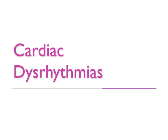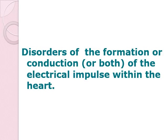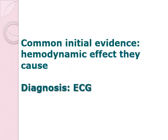Hello, this is your discussion on cardiac dysrhythmia. Dysrhythmia is any disorder of the formation or conduction, or both, of the electrical impulses within the heart. The concern here is electrical impulse — it causes disturbance or irregularity in the electrical system of our heart. The common initial evidence is the hemodynamic effect they cause, which includes changes in the pulse rate and blood pressure brought about by problems in electrical conduction. Patients would often report to the ER with palpitations and hypotension, from which we identify the presence of arrhythmias.